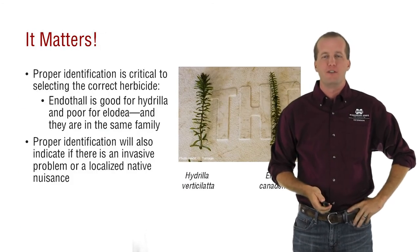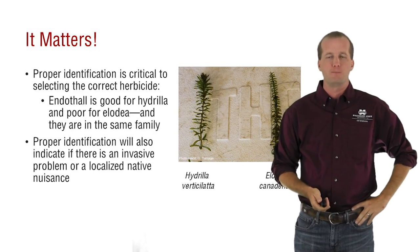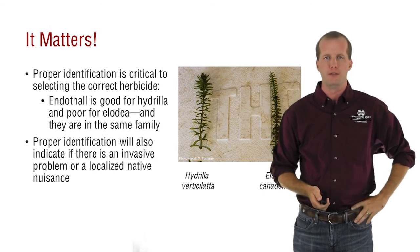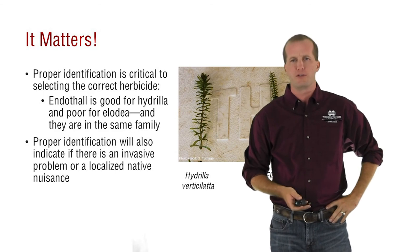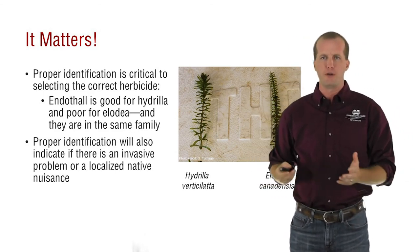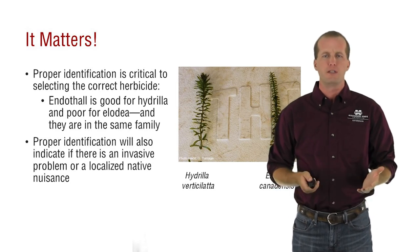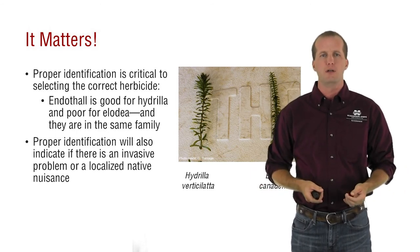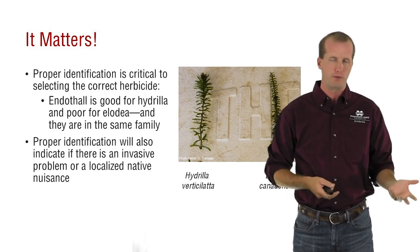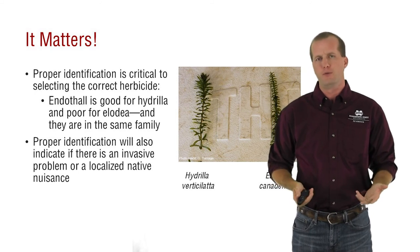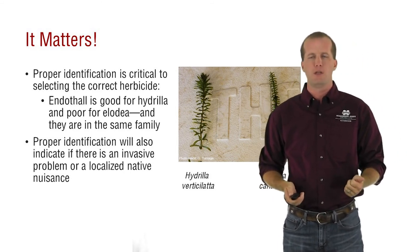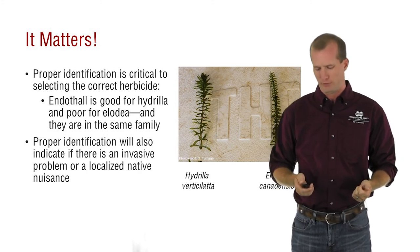The kind of species matters because proper control starts with proper identification. In this image we have two species that look very similar and are both closely related — they both fall in the plant family Hydrocharitaceae. The one on the left is an invasive species and the one on the right is a native. Typically we manage for our natives and try to control or eradicate our invasives. In this case, if you thought you had elodea and tried to use the herbicide endothal, it wouldn't work very well — even though it looks similar to hydrilla, which endothal will work very well on. You'd end up wasting a lot of time and money on herbicide trying to control a plant species that you probably didn't need to control to begin with, and one that would not respond to that particular control strategy.